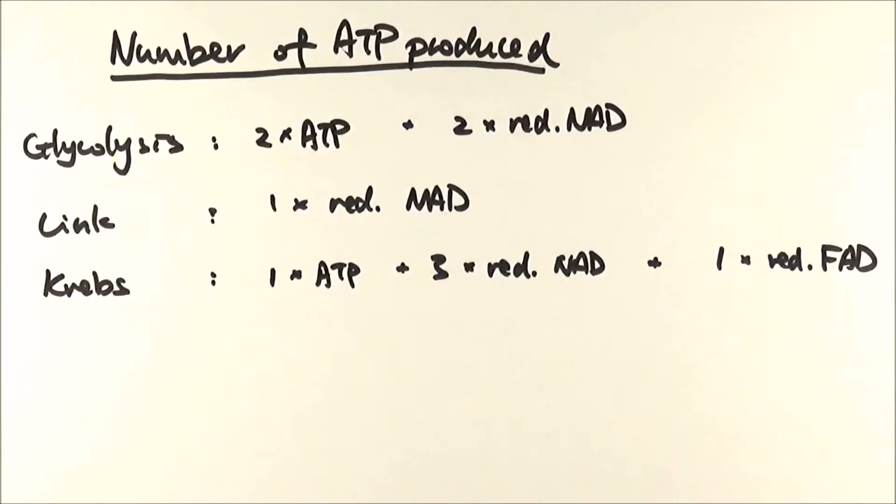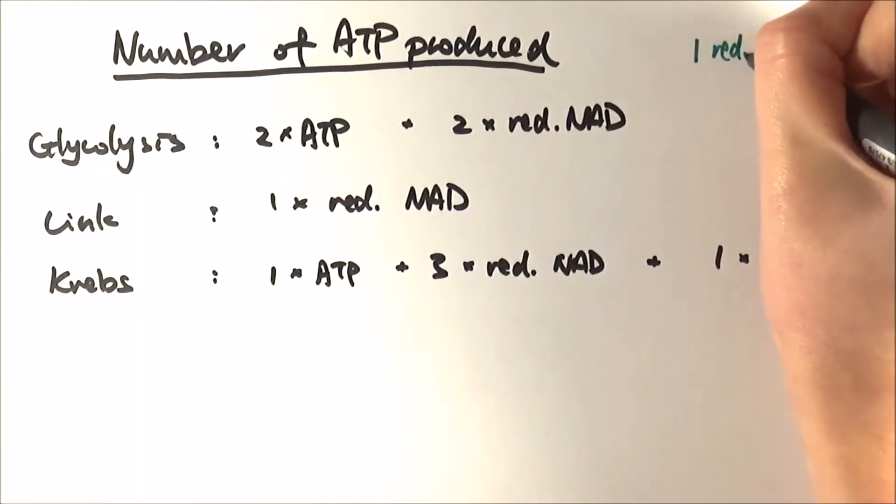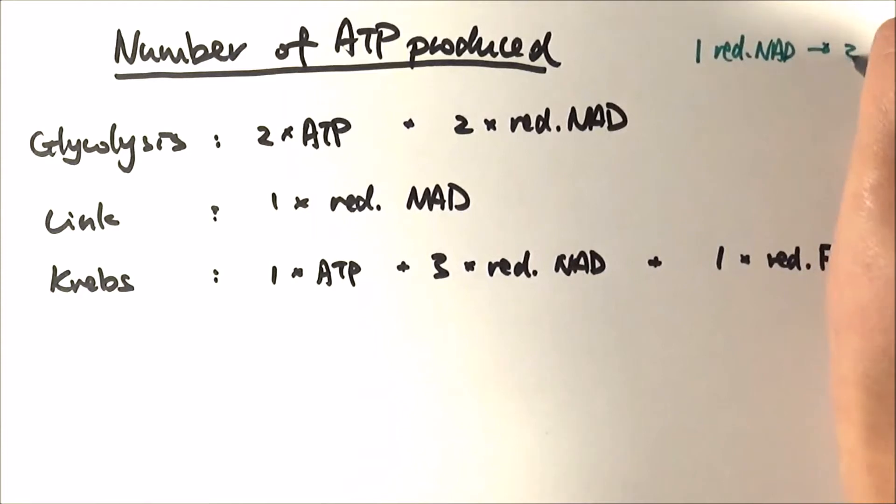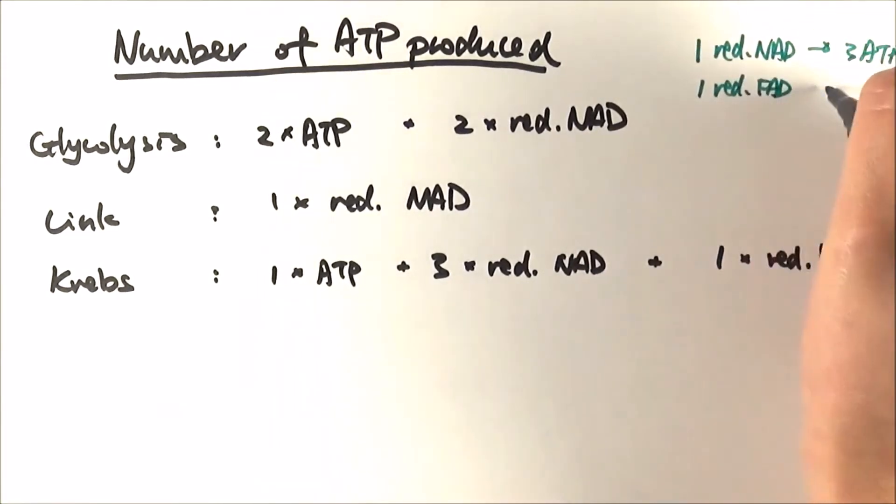Then oxidative phosphorylation is where we look at everything here and then decide how many ATP can be made in this case. Thinking back, we mentioned before that the different coenzymes can make different numbers of ATP. So we say that 1 reduced NAD can make 3 ATP, whereas 1 reduced FAD can make 2.